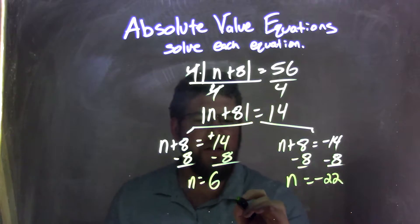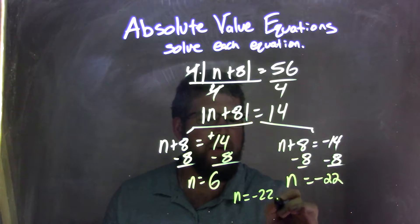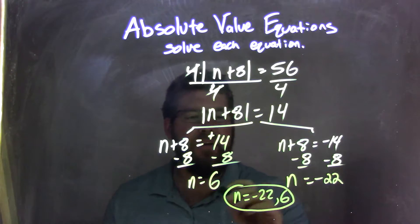So our final answer is n equals negative 22 and positive 6. We write it from least to greatest because that's nice and neater.